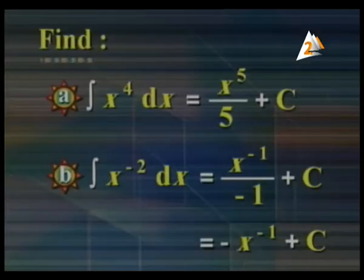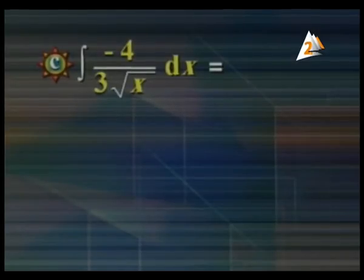c is called the constant of integration. Number (c): what is the integration of negative 4 over 3 times the square root of x dx? Remember, square root of x means x to the power of one half, because x^(1/2) times x^(1/2) equals x.